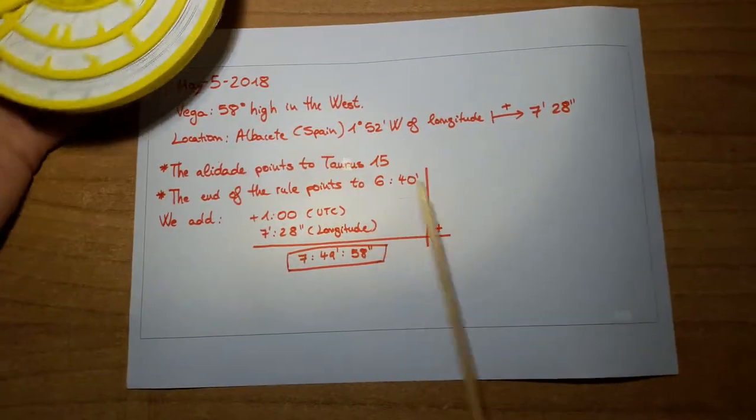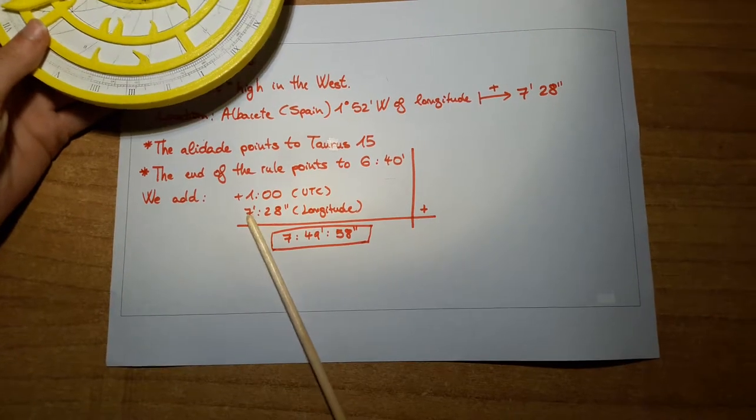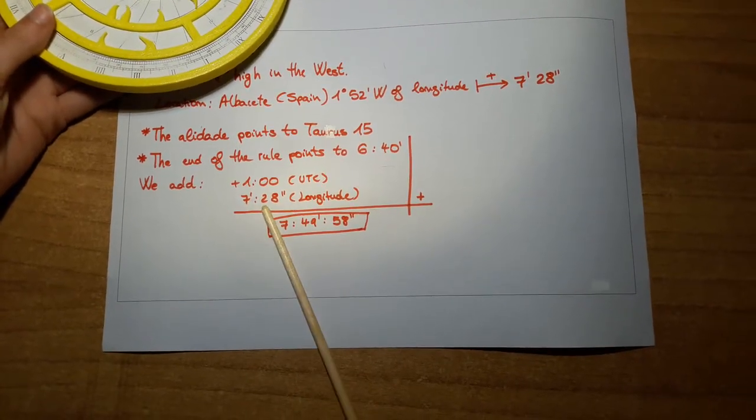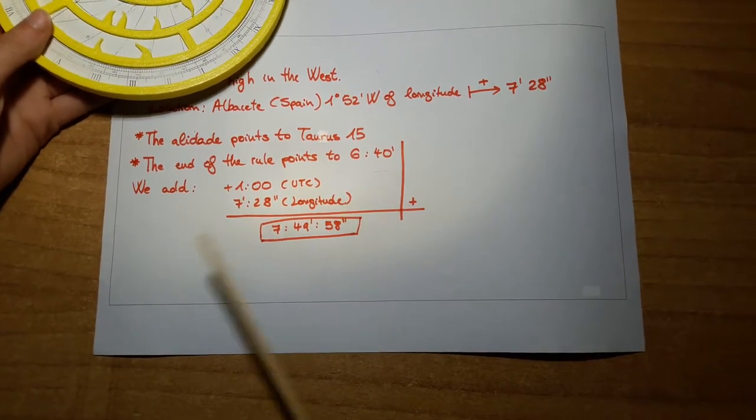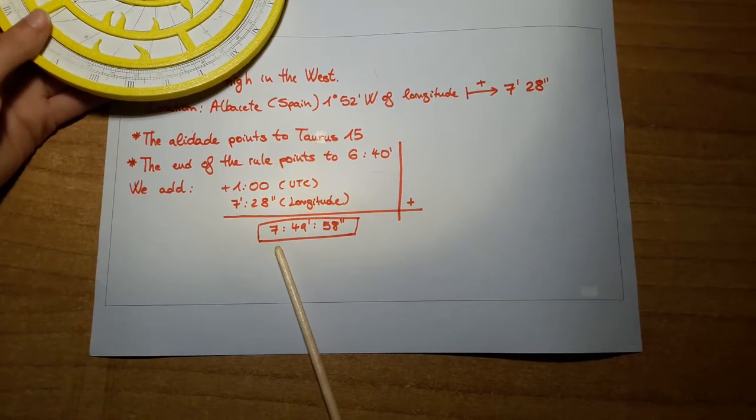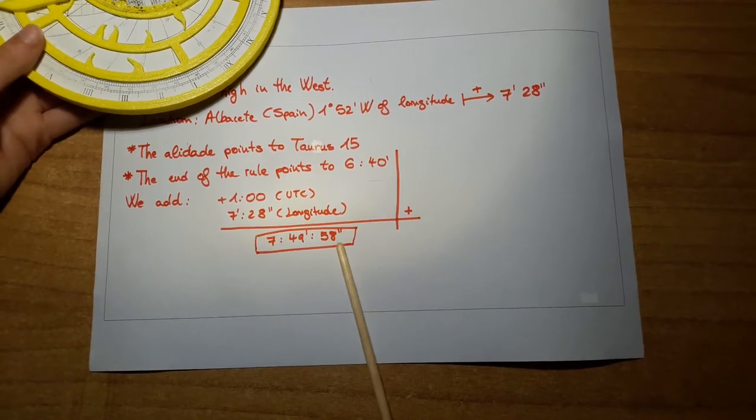Okay? Then we add 1 hour because of UTC, and 7 minutes 28 seconds because of longitude. And the final result is 7 hours 49 minutes and 58 seconds.